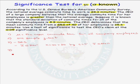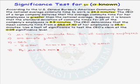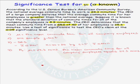Now we name our null hypothesis in English and in symbols. In symbols, our null hypothesis H-naught is that mu equals 24.3 minutes. In English, the null hypothesis is that the mean commute time for all company employees equals 24.3 minutes — the same as the national average.